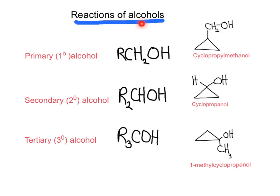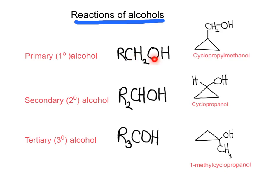Before we look at the different reactions for the family of alcohol, it's important to have a clear understanding of the different types of alcohols. A primary alcohol is one where the OH hydroxyl group is bonded to a carbon that is bonded to two hydrogens. It could be one carbon or it could be many other carbons, but it's important that the carbon that bears the OH is bonded to one carbon.